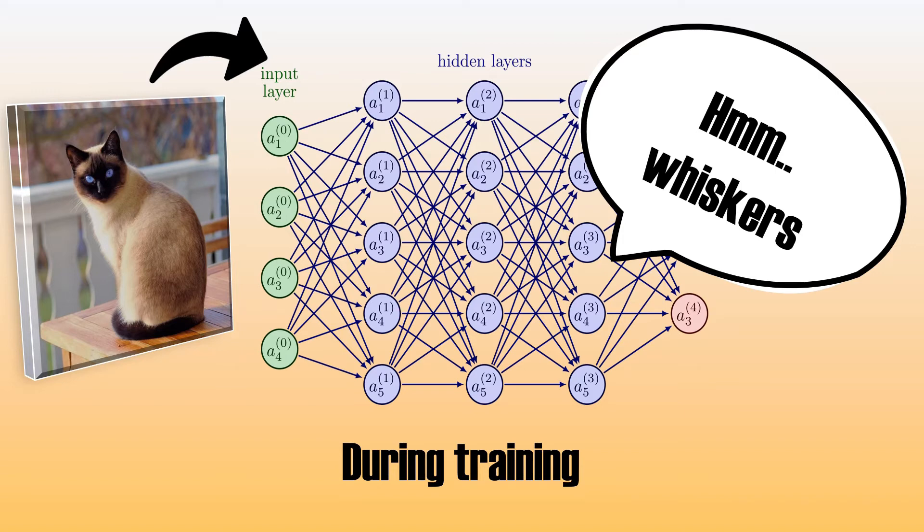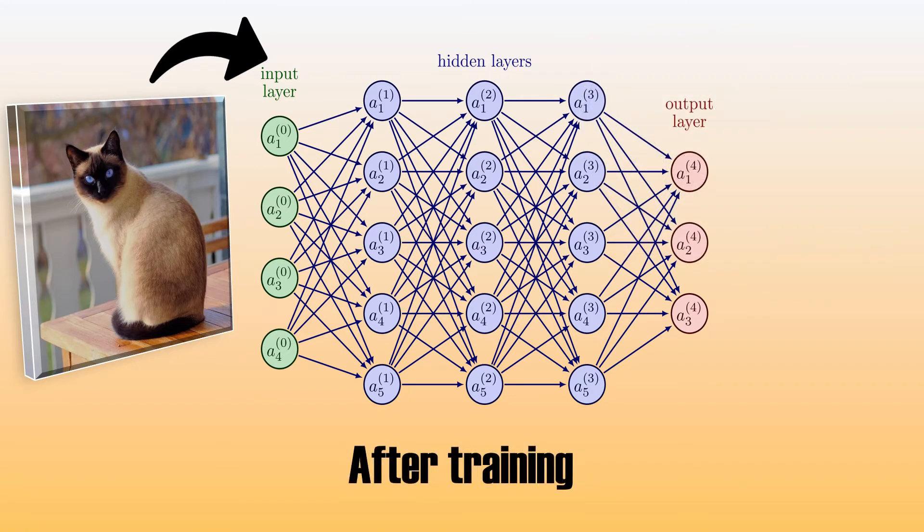For example, cats having whiskers, which dogs do not have, and that cats tend to have more pointy ears. The neural network will pick up on those patterns, and the weights of the connections will be updated accordingly to highlight these patterns.